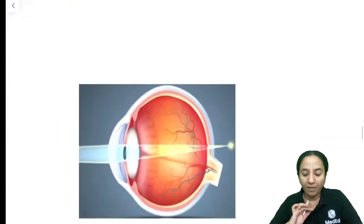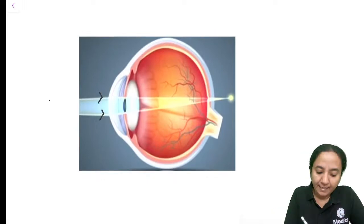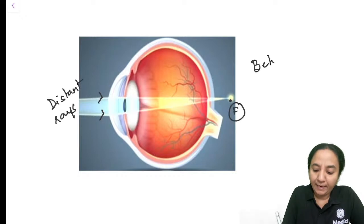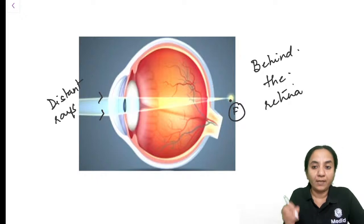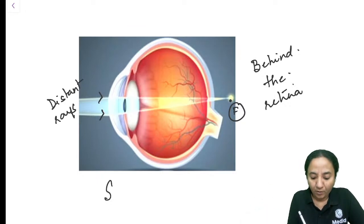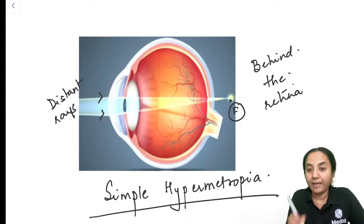The counterpart of myopia is simple hypermetropia. Here, parallel or distant rays after refraction meet at a point F which is behind the retina — exactly the opposite of myopia. In myopia, the focal point is in front of the retina; in hypermetropia, it is behind the retina.